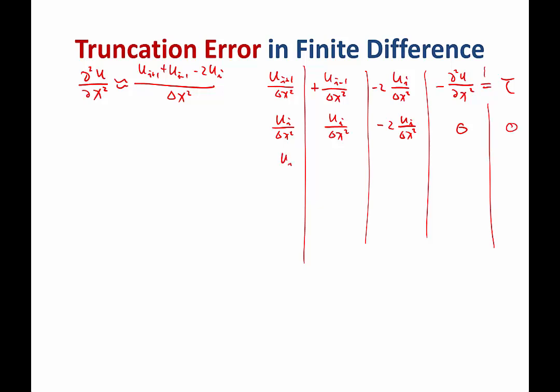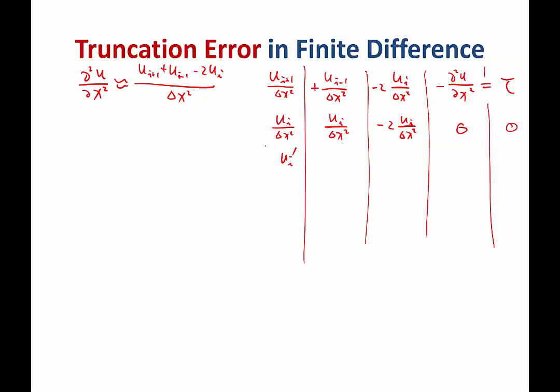We also have a ui prime part, which is the first derivative. And that turns out to be that, and this turns out to be minus that. There is no square, because one of the squares cancel out. And 0, 0, we get 0.